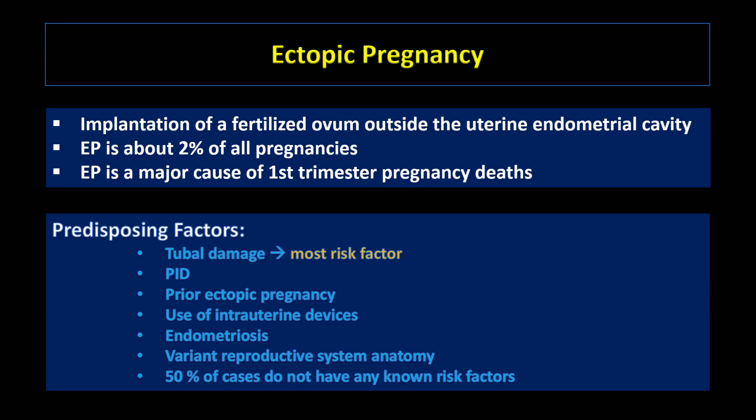The main risk factor for ectopic pregnancy is tubal damage, either due to surgery or disease. Other risk factors include pelvic inflammatory disease, prior ectopic pregnancy, use of intrauterine devices, endometriosis, and variant reproductive system anatomy. However, about 50% of ectopic pregnancy cases do not have any known risk factors.